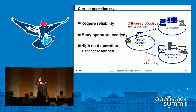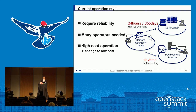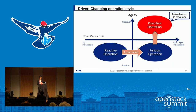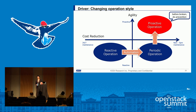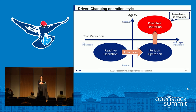At KDDI, we require reliable mobile network service and infrastructure due to telecom regulation. Many operators are needed at remote operation centers and data centers, operating 24-hour shifts. The operation cost of this area is very high, and we want to change to low-cost operation. There are three types of operation. Currently our operation is reactive, which is high cost. One part is moving to periodic operation like OTT or Google. But our goal is proactive operation — for example, predicting server failure and performing live migration before hardware breaks, to save VNF or VMs.